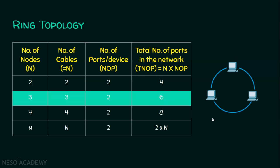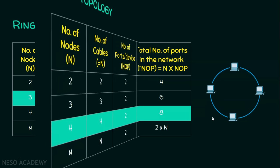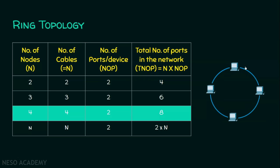Now we will see if the number of nodes is four. If there are four nodes in a ring topology, then four cables are required — cable one, two, three, and four — and each node must have two ports, giving a total of eight ports. If there are a hundred nodes in a ring topology, it is very difficult to manually draw all nodes and solve it, so we need a formula to do this.